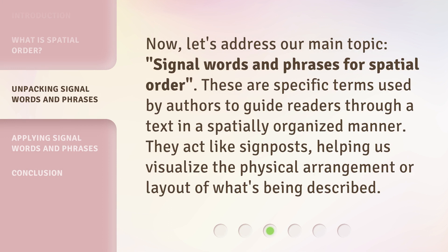Now, let's address our main topic: signal words and phrases for spatial order. These are specific terms used by authors to guide readers through a text in a spatially organized manner. They act like signposts, helping us visualize the physical arrangement or layout of what's being described.